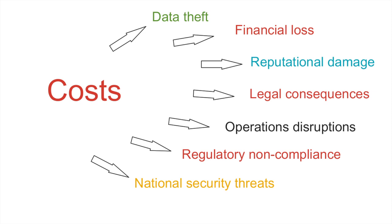Number six is regulatory non-compliance. Every business has legal and regulatory requirements for customer data. Any company that does not protect customer data and violates the legal conditions is going to experience a regulatory non-compliance issue. Of course, there are going to be penalties, legal action, damage to the company's reputation, and many other things.